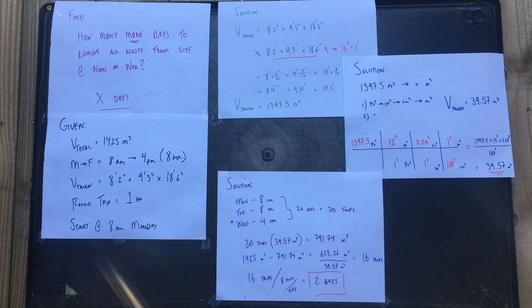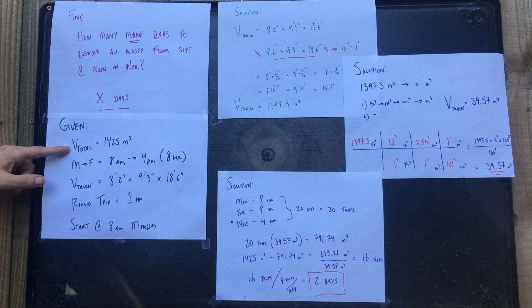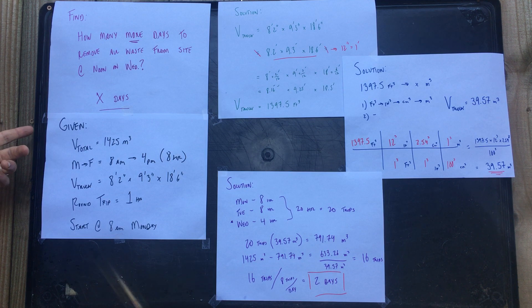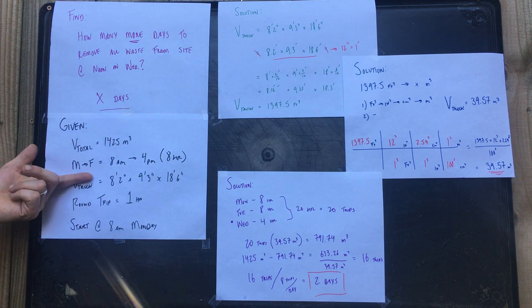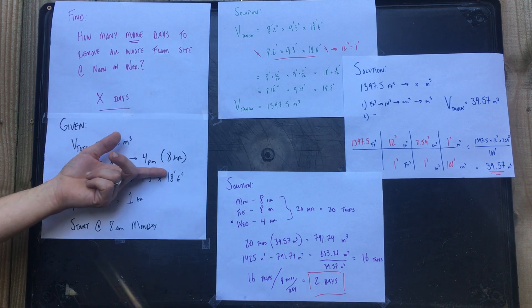To determine what our given is, we're gonna go through sentence by sentence and write down anything with a number in it. Sentence one: this is the total waste V_total (subscript I made, you can do them however you want) - 1425 cubic meters. Next sentence: driver works Monday through Friday from 8 a.m. to 4 p.m. with no breaks - that's an eight-hour day.